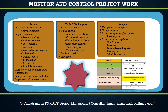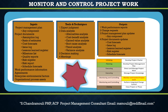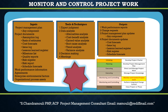The next input is Schedule Forecasts. Schedule forecasts are derived from progress against the schedule baseline and computed time estimate to complete. This is typically expressed in terms of Schedule Variance (SV) and Schedule Performance Index (SPI). For projects not using earned value management, variances against planned and forecasted finish dates are provided. The forecast may be used to determine if the project is still within defined tolerance ranges and to identify any necessary change requests.